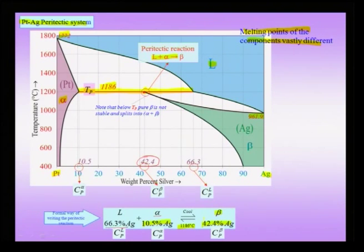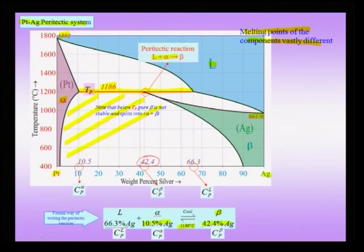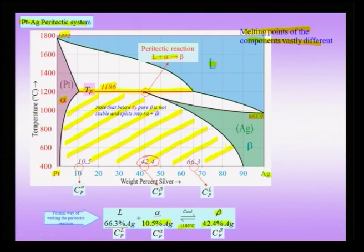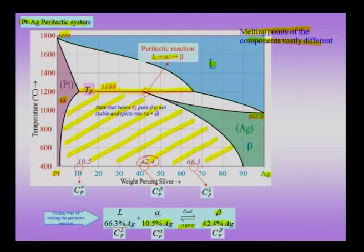As evident from the phase diagram, just below the peritectic temperature of 1186°C, the stable phase field is alpha plus beta — not the pure beta produced during the peritectic reaction. If we slowly cool the system, even for the peritectic composition of 42.4 percent silver, just below 1186°C we get an alpha plus beta mixture, though this is not the original product of the peritectic reaction. This is an example of a peritectic system where liquid reacts with a solid to produce an interfacial beta.